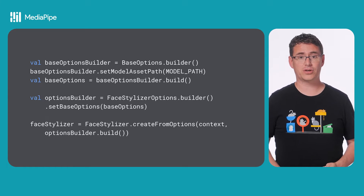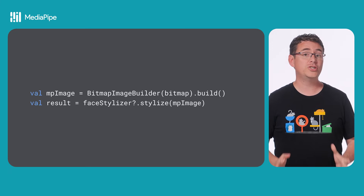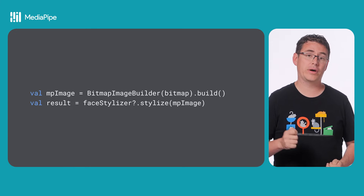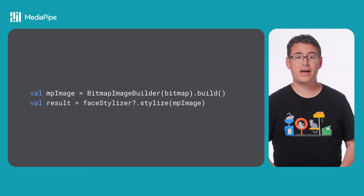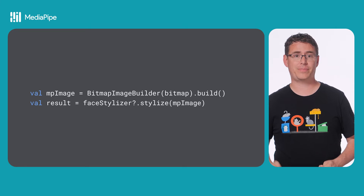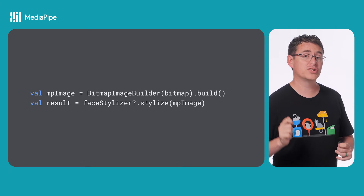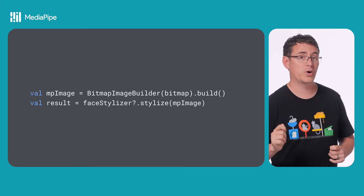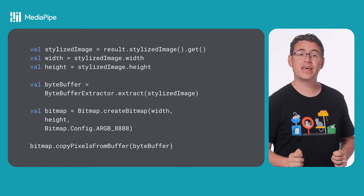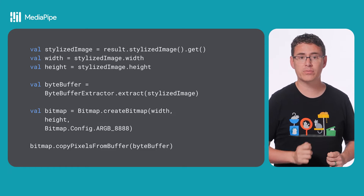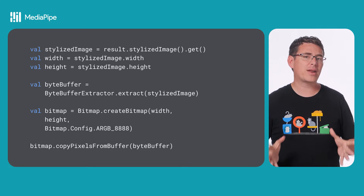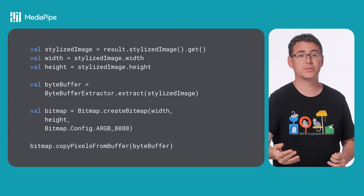From there, you can create your Face Stylizer. Once you have an image that you want to stylize, you can take the bitmap and convert it into a MediaPipe image object, then call stylize on the Face Stylizer to get your results object back. Since there are no listeners or streaming running mode involved here, this will happen synchronously. You can then extract the MediaPipe image from that result, turn it into a byte buffer, and then finally change it back into a bitmap that you can display within your app.